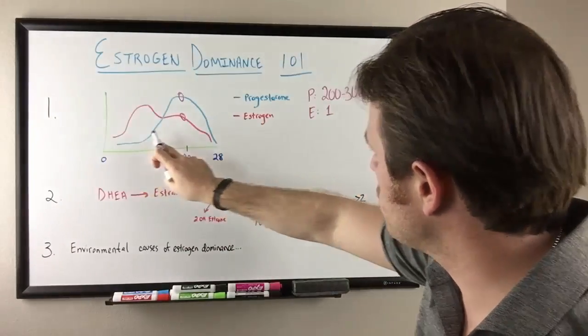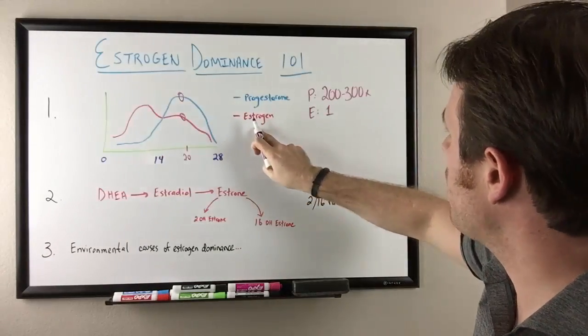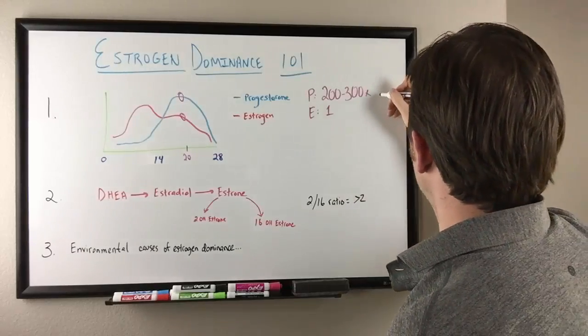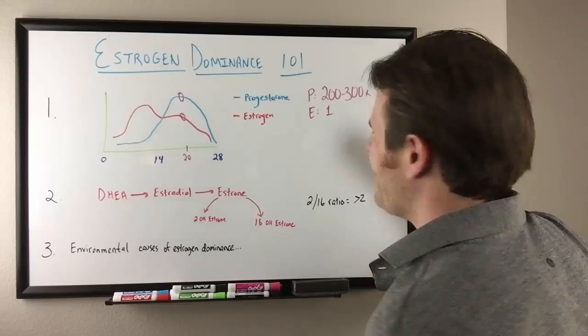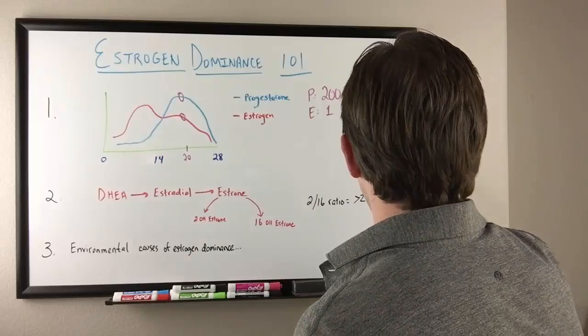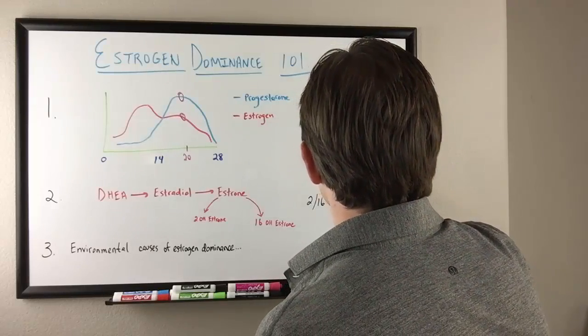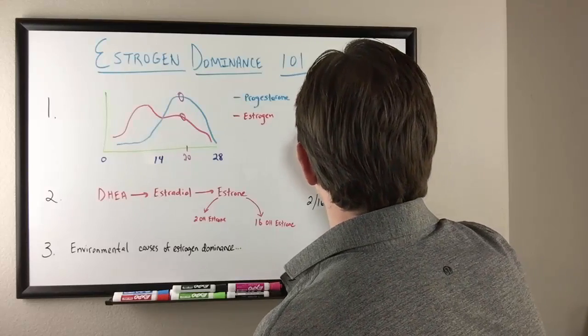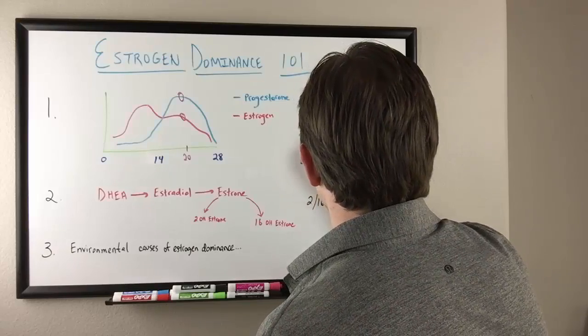Now if you add all the plots of progesterone up in blue, progesterone's in blue, all the plots of estrogen in red, typically on average, this is day 20, 18 to 22 roughly.